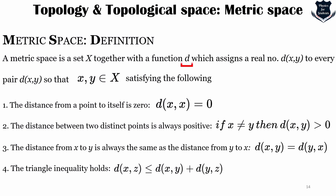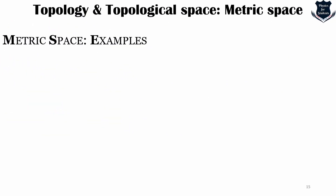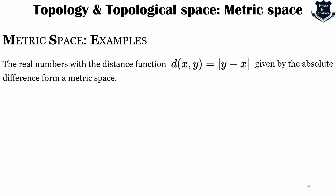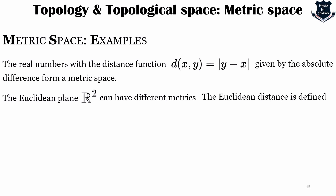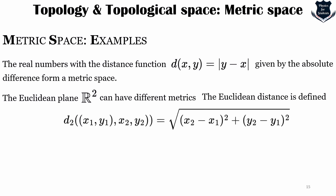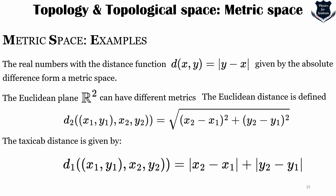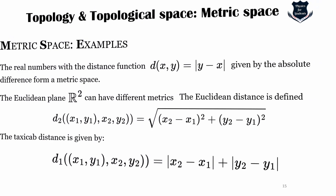The metric space definition uses the function d, and it obeys four conditions including the triangle inequality. Some examples of metric spaces: the real numbers with the usual distance function give the standard distance; Euclidean space R² can have different metrics such as the taxicab distance. So from Euclidean space we have moved into metric space, which uses real numbers measured with the distance function d.